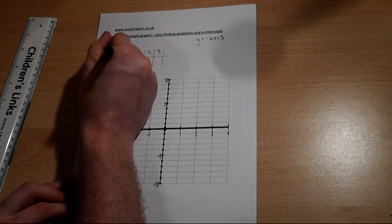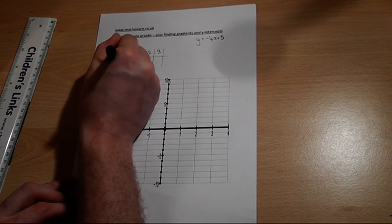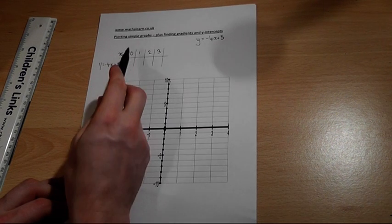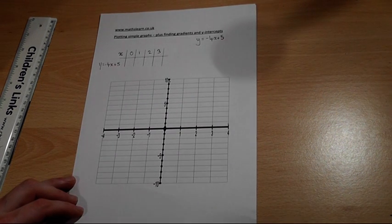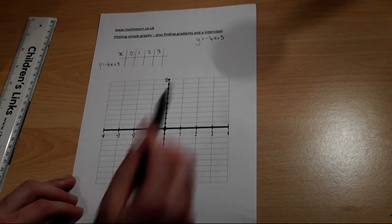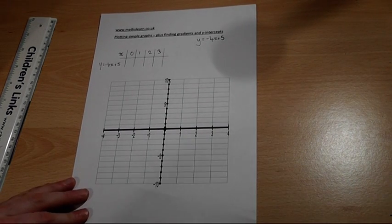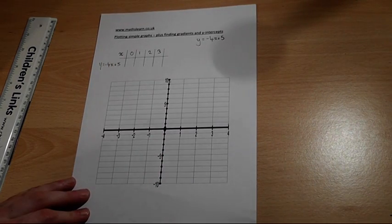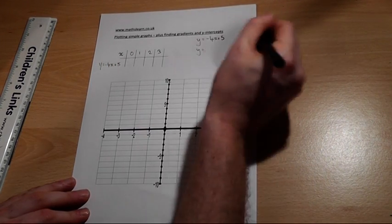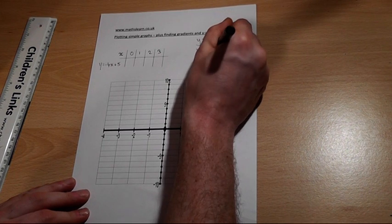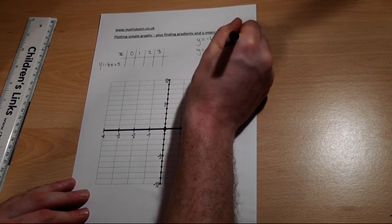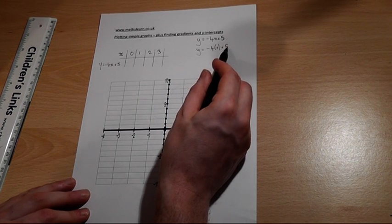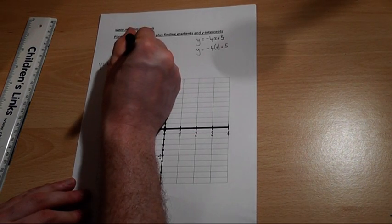Then to find the corresponding y-coordinate for each of these x-coordinates, being very careful with the signs—this is where the errors will occur, the minus 4x. So, if x equals 0, y equals minus 4 lots of 0 plus 5. Well, anything times 0 is 0, so add 5, we're going to get 5.